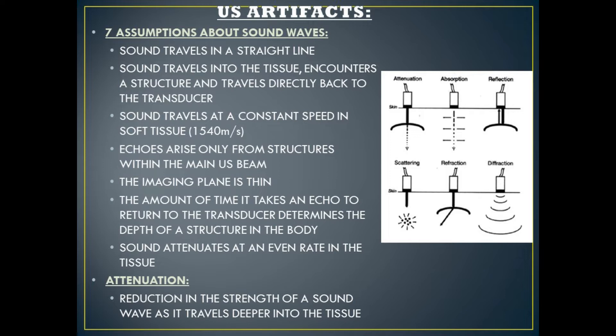Number four, echoes arise only from structures within the main ultrasound beam. Number five, the imaging plane is thin. Number six, the amount of time it takes an echo to return to the transducer determines the depth of a structure in the body. And number seven, sound attenuates at an even rate in the tissue. Note that attenuation means a reduction in the strength of a sound wave as it travels deeper and deeper into the tissue.